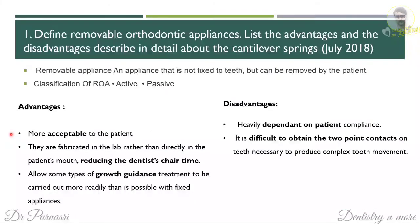Here we have a long question: define removable orthodontic appliances, list the advantages and disadvantages, and describe the cantilever spring. A removable orthodontic appliance is one that is not fixed to teeth but can be removed by the patient. Classification includes active or passive types. The advantages are it is more acceptable to the patient and helps reduce chair time since we fabricate it in the lab, and it can also help in some growth guidance. The disadvantages are it is dependent on patient compliance and it is difficult to obtain the two-point contact required for complex tooth movements.